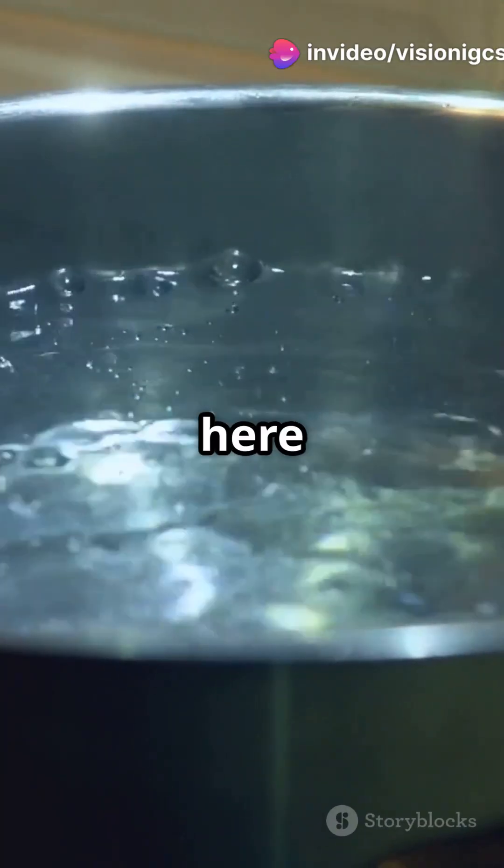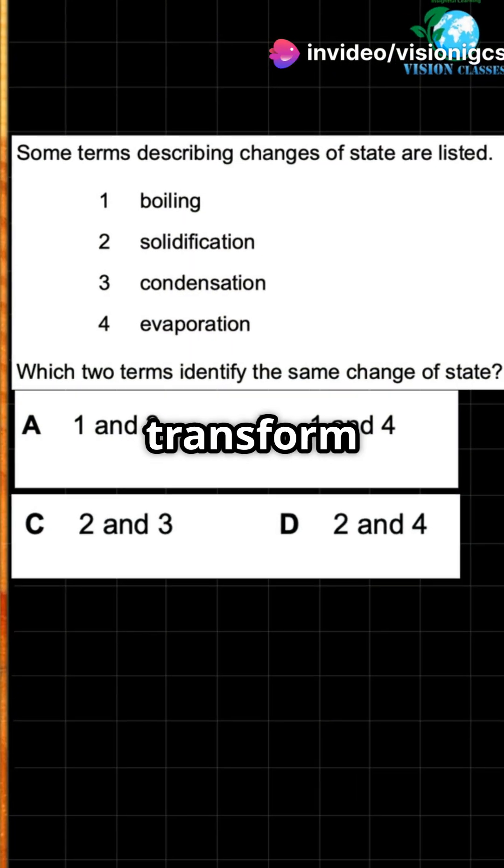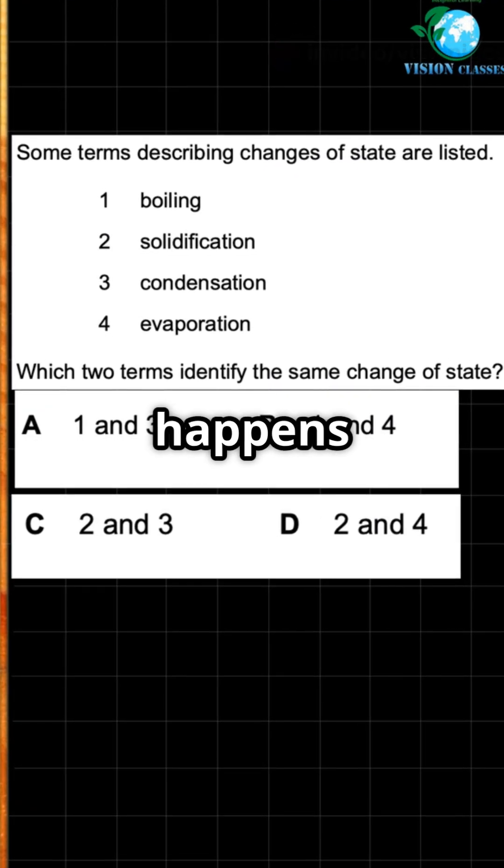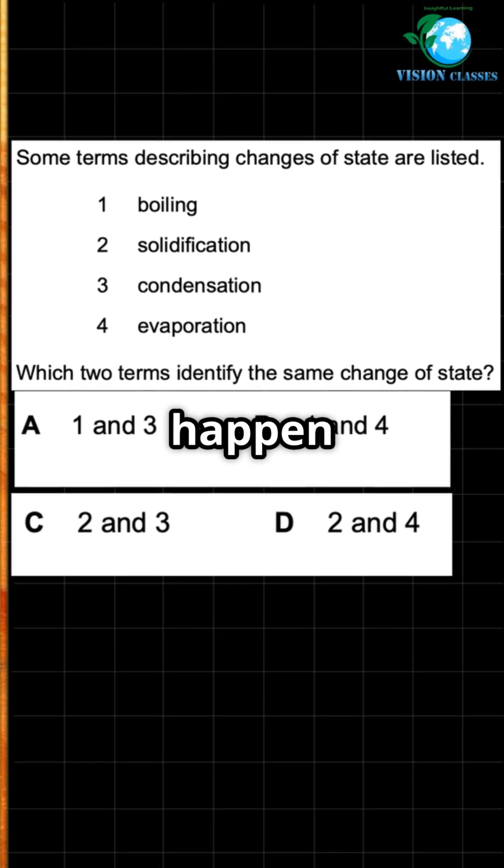So the real twins here are boiling and evaporation. Both transform liquid into gas. Boiling is fast and happens at one temperature. Evaporation is slow and can happen at any temp.